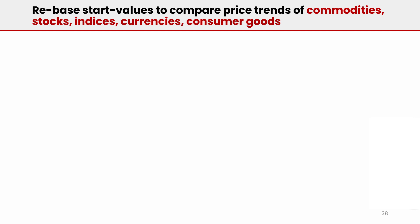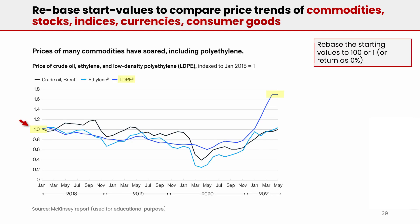Let me share some examples from reports of top consulting firms. If you wish to compare the price trends of crude oil, ethylene, and low-density polyethylene, you rebase all their prices at a common point of one unit and see that over a period of time, the same commodity is available at maybe 1.7 units. This tells you that one product is far more expensive compared to the others.